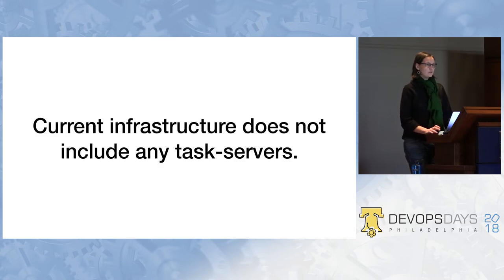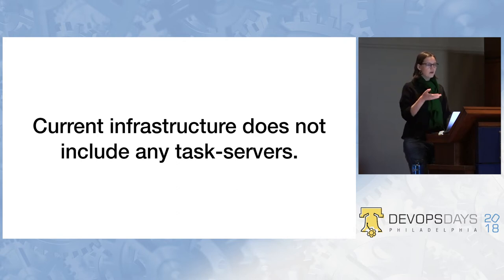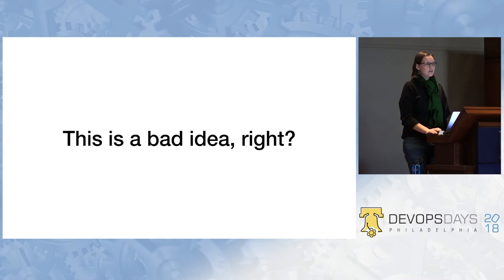Back to my situation: we had no task servers. If you want to run a scraper you probably don't want to run it on the end of a web request — triggering it, letting the user wait, parsing the response, and sending it back — that's no good, don't do that. You probably want a task server so you can delay the response. We didn't have any of those; we literally just had Lambdas. So at this point you're thinking: this is a terrible idea — you've said the words 'Chrome' and 'Lambda' — this is bad.